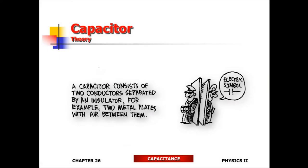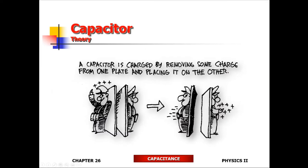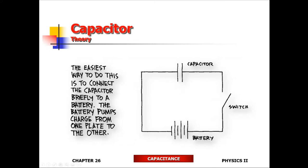Let's talk about capacitors — these are charge storage devices. Usually they're composed of two plates, known as a parallel plate capacitor. One plate gets positive charge, the other gets negative charge. The amount of charge on one plate is equal to the amount on the other. To charge it up, you hook up a battery. The negative terminal connects to one plate, the positive terminal charges the other. The capacitor gets charged up as soon as you throw the switch on.